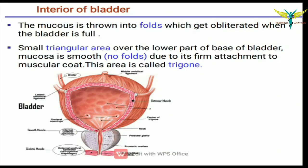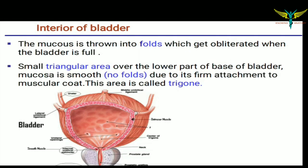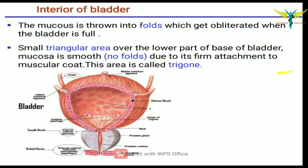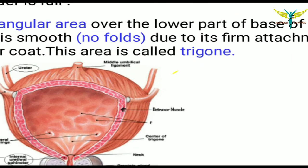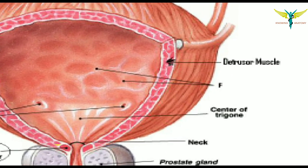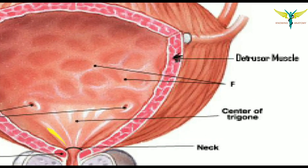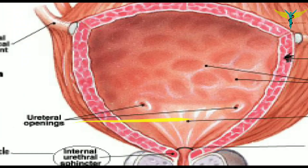Coming to the interior of the bladder: the mucosa is thrown into folds which get obliterated when the bladder is full. The bladder is covered by transitional epithelium. A small triangular area over the lower part of the base, where the mucosa is smooth with no folds and has firm attachment to the muscular coat, is called the trigone.